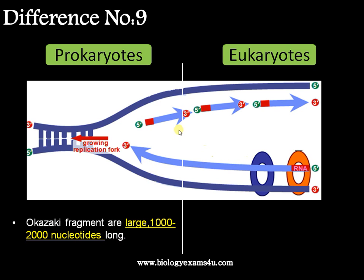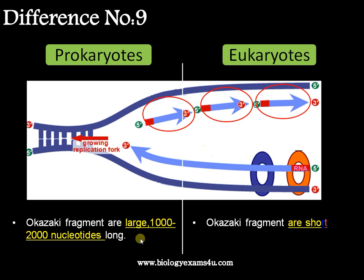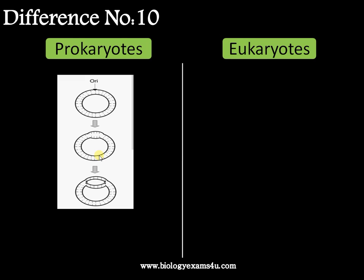Difference number nine is regarding the size of Okazaki fragments. In the lagging strand, DNA is synthesized as short stretches called Okazaki fragments. In prokaryotes, these are approximately 1,000 to 2,000 nucleotides long, whereas in eukaryotes they are much shorter — approximately 100 to 200 nucleotides long.